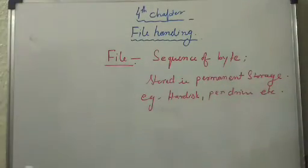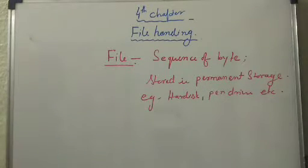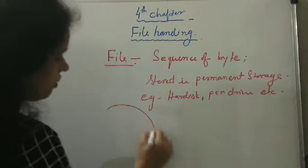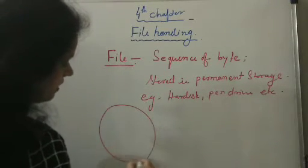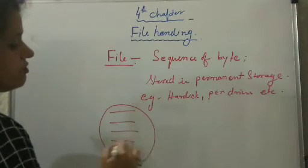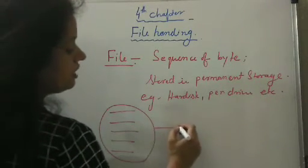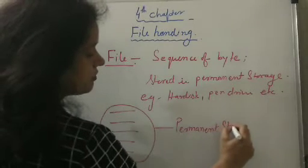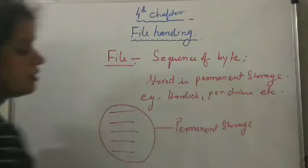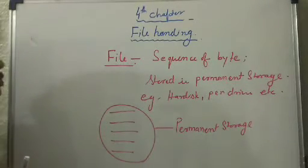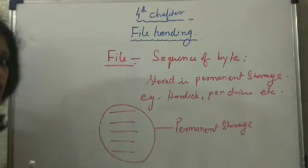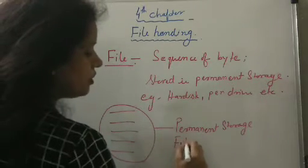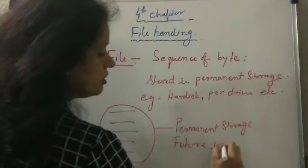So this is the file. As you know very well, various information you are storing in the form of files. So you can say that a file is a collection of information which is stored in the permanent storage, to retrieve it for future use.